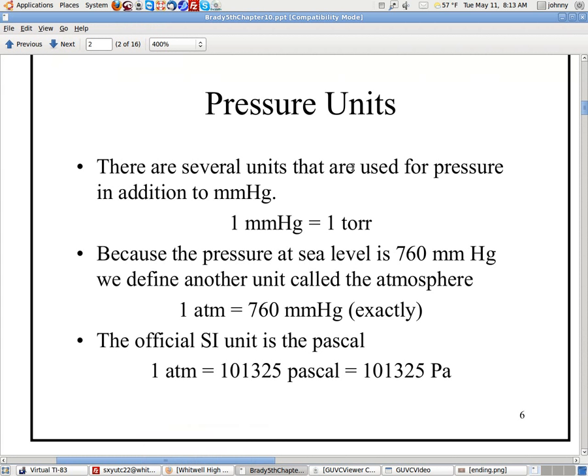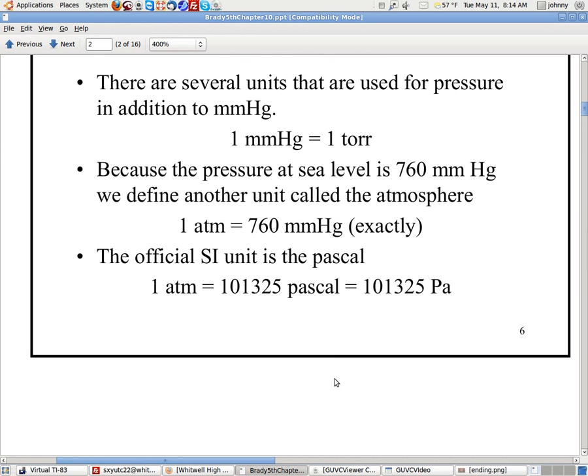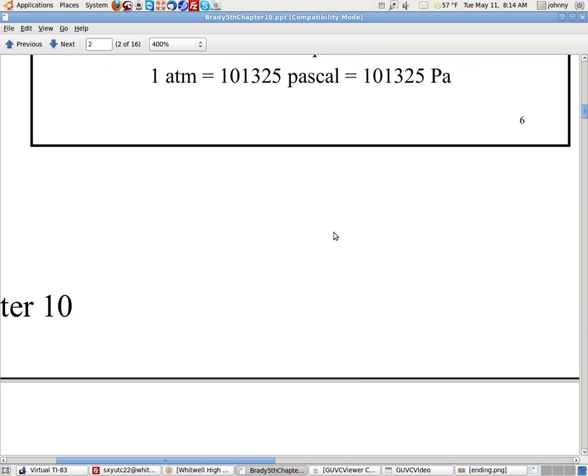The first problem in the set of notes starts right here. Pressure units. You need to know that 1 millimeter of mercury is 1 torr. Also that 1 atmosphere is 760 millimeters of mercury exactly. And also that 1 atm is 101,325 pascals, which is basically 101.3 kilopascals. Make sure that you retain that information, memorize it.